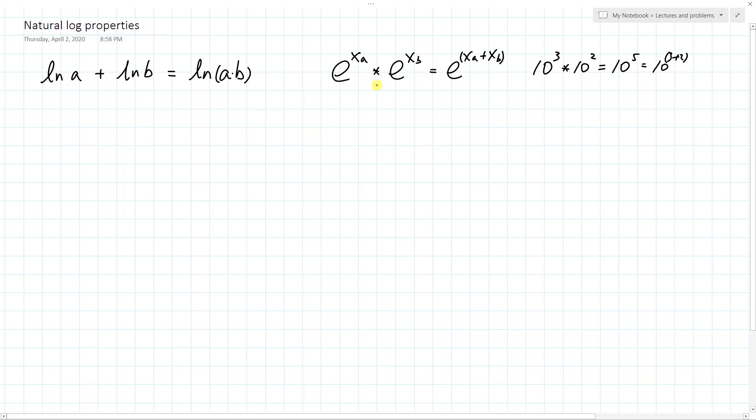So hopefully by this point, even if you forgot this relationship, just by looking at this, you find it easier to actually recover that memory. It's just 1,000 times 100 is 100,000, and how do you make 100,000? 10 to the 3 plus 2 power. Hopefully this other relation is also easy to understand.